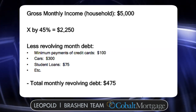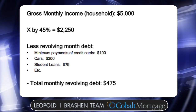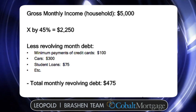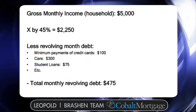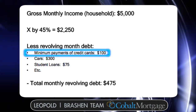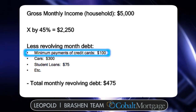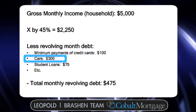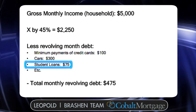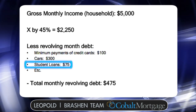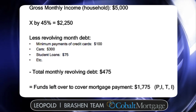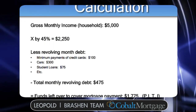Then the bank is always going to take off minimum payments that come up on your credit report. So for the case of this example, we have minimum payments on credit cards of about $100 a month, car loan of about $300 a month, and student loans about $75 a month. And again, this is what comes up on a credit report.